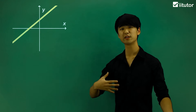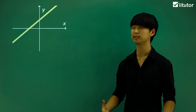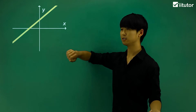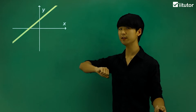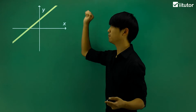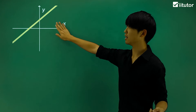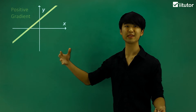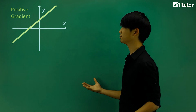Now we're going to go through the different types of gradients that we can get. This is a nice one to start off with. Going from down to up like this — a line like that — will have a gradient that is positive.